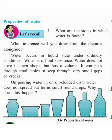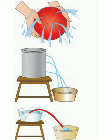Now, an experiment. Take an oil-coated dish and pour water on it. The water does not spread in the dish but forms small round drops. Why does this happen? What's the reason behind it?